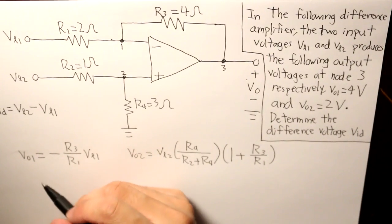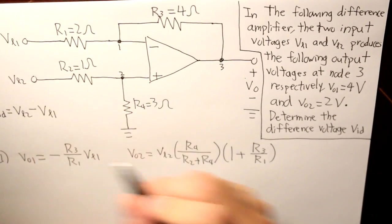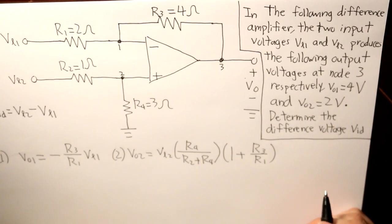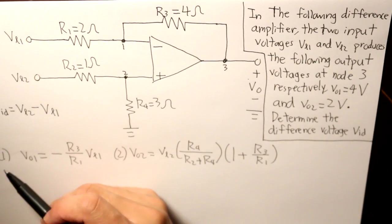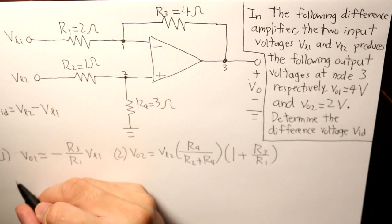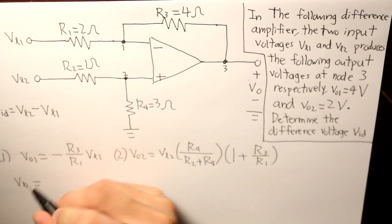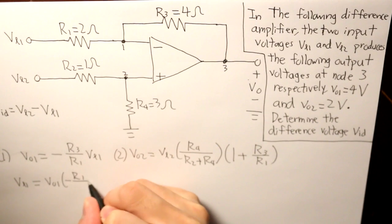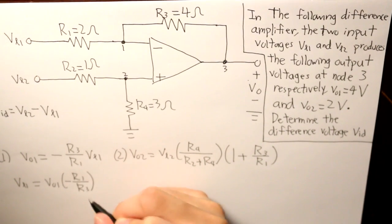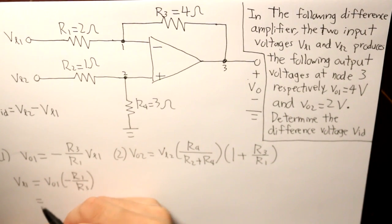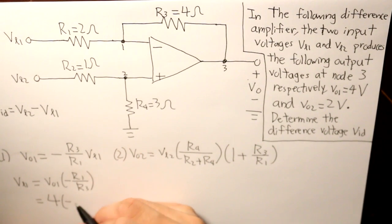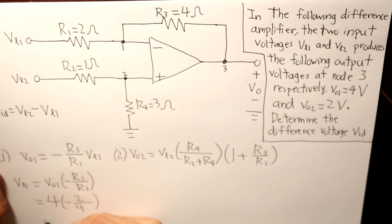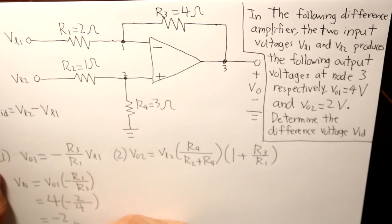So in this equation, we'll just label each equation numerically. So we have equation one, and that would be VL1 is equal to V01 times R1 over R3. And that would basically be 4 times negative 2 over 4. And that would be negative 2 volts.